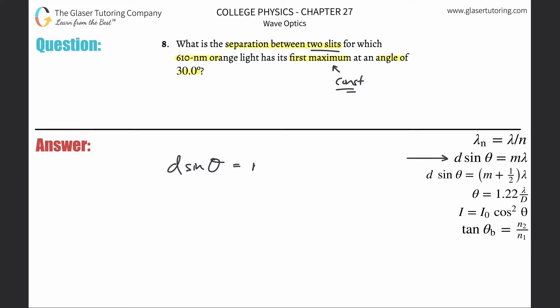And that will equal the order m of the maximum multiplied by the wavelength of the light. So if I want to solve this for the distance, all I've got to do is divide out the sine of the angle.